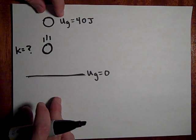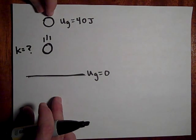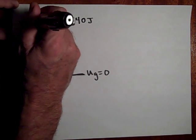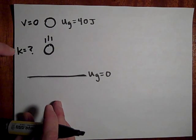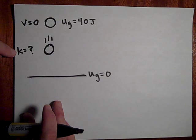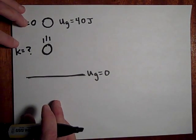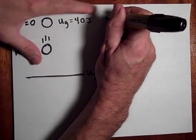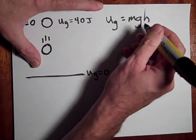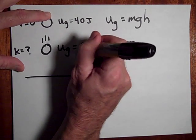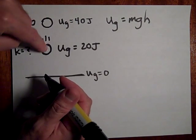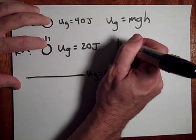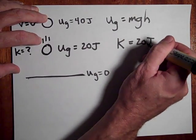Next: an object has 40 joules of potential energy at the top and no kinetic energy there. Halfway down to the potential energy zero line, the potential energy is mgh — if you have half the height, you only have 20 joules of potential energy. With no air resistance, the remaining 20 joules must be kinetic energy, so that they add up to 40 joules total.